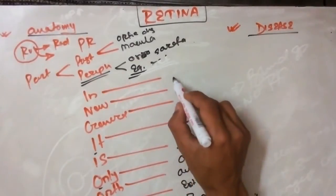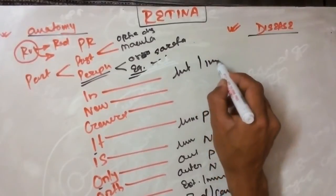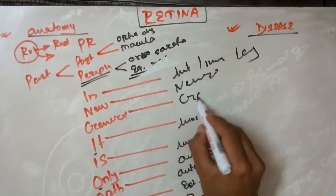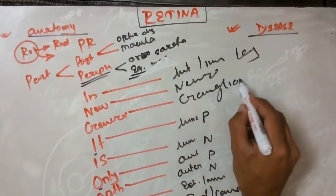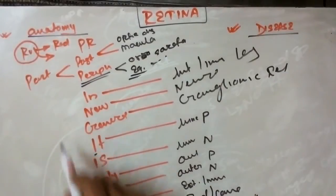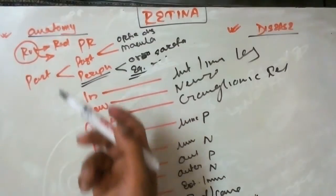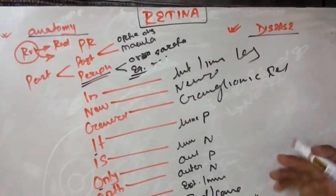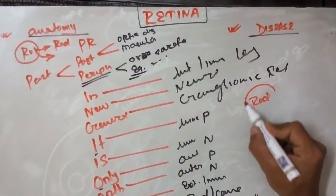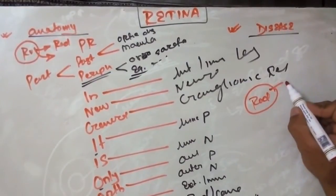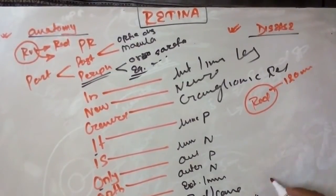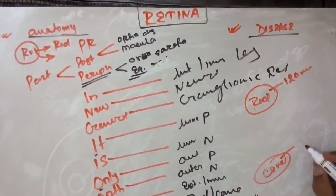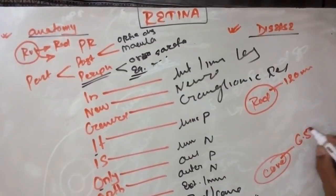Now regarding a few points related to rods and cones: rods are more in number — that is 120 million rods are present. But cones are less in number — usually 6.5 million cones are present. Rods have rhodopsin pigment and cones have iodopsin pigment. Rods are for dim vision and cones are for bright vision — everybody knows these things.